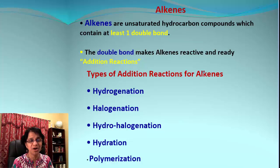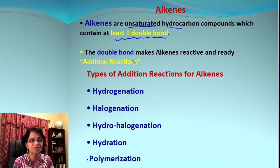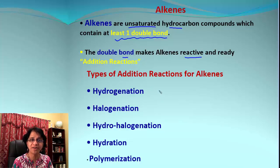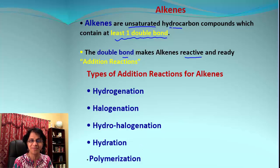Let's again review what alkenes are and what are the different types of addition reactions. Alkenes are unsaturated hydrocarbons and they contain at least one double bond, and this double bond is the one which makes alkenes reactive. Based upon the reactant which is getting added to the alkene, we have these different types of addition reactions: hydrogenation, halogenation, hydrohalogenation, hydration, and polymerization.